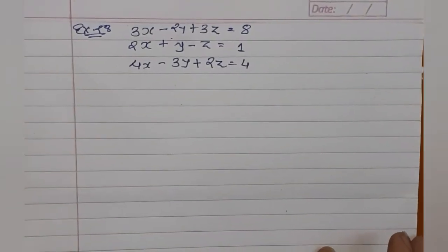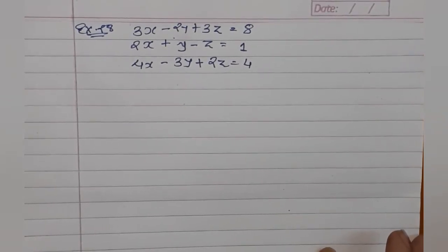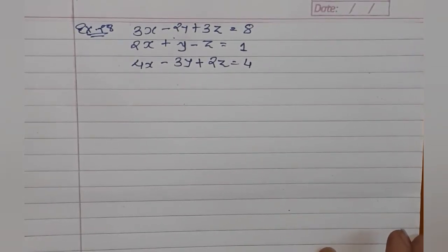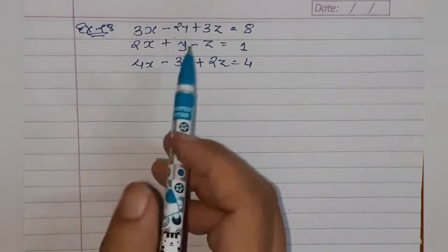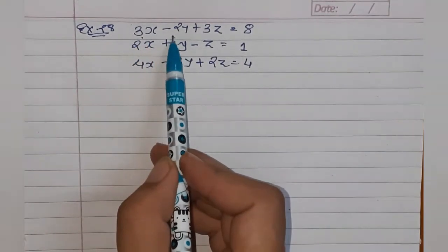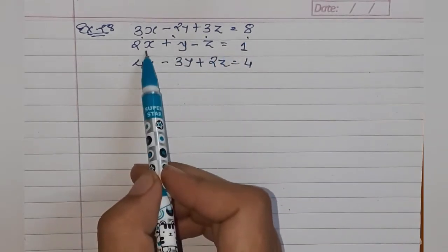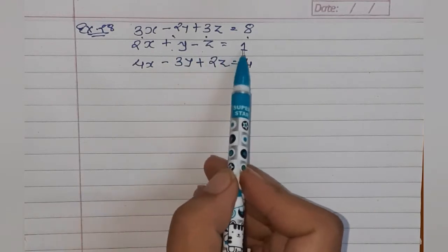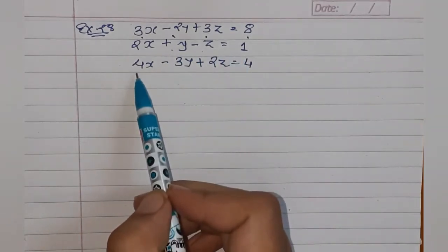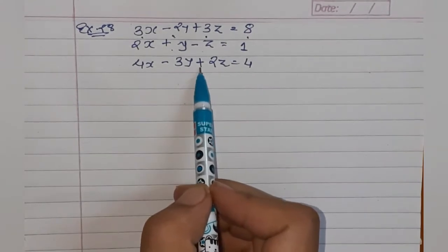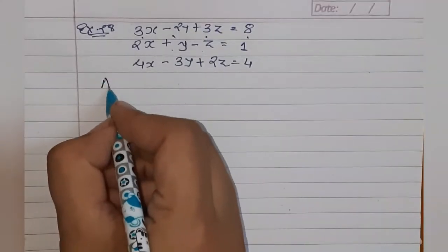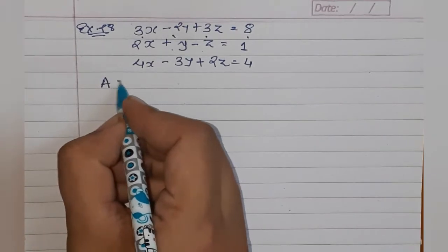ઉદાહરણ 28: શ્રેણીક પદ્ધતિ થી નીચેની સુરેખ સમીકરણ સહતિ નો ઉકેલ મેળવો. પહેલું સમીકરણ: 3x - 2y - 3z = 8, બીજું: 2x - z = 1 (અથવા 8), ત્રીજું: 4x - 3y - 2z = 4. ત્યાંથી પહેલા ત્રણ શ્રેણીક A, B, અને X બનાવો.